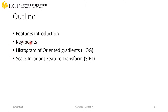The first type will be keypoints, the second is Histogram of Oriented Gradients. You already know all these terms — you know how to compute gradients, orientation, and histograms, so these features are based on those concepts. Then we have SIFT feature extraction, which stands for Scale Invariant Feature Transform. We'll cover what scale means, what invariant means, and how the transformation is used.